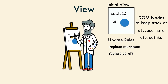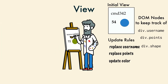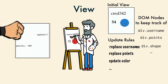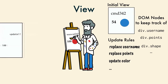Next, the model sent the view a new color. The view remembered yet another update rule and kept track of another DOM node. Then he changed the color right there on the DOM. The view thought that that might be the end of the update rules. But they just kept adding up. He had to keep track of so much. And sometimes the order of the update events mattered.